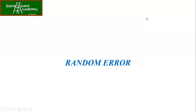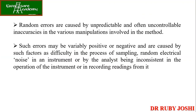Moving on to random errors — we have already mentioned that there are two types of error: systematic and random. Random errors are caused by unpredictable and often uncontrollable inaccuracies in the various manipulations involved in the method. In many cases these arise from the instrument — for example, a spectrophotometer may introduce variability that you have no control over.